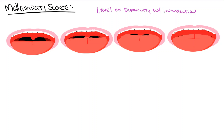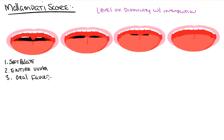Class 1, as pictured here on the left: the pink represents our soft palate, which is posterior to the hard palate on the roof of the mouth. You can see the entire uvula, you can see the oral fauces, and the tonsillar pillars.